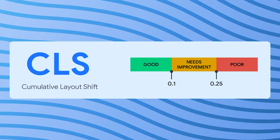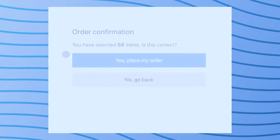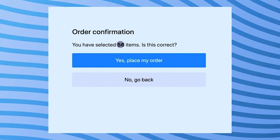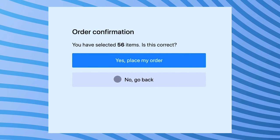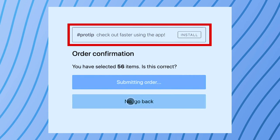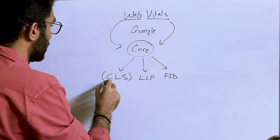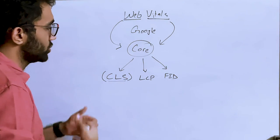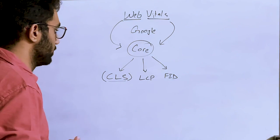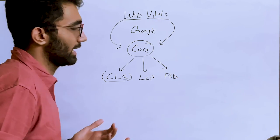Let's look at these metrics one by one, starting with Cumulative Layout Shift. As you can see on the screen, if you wanted to place an order or go back, you might accidentally click 'submit order' because of a notification that appeared suddenly at the top. That is a cumulative layout shift, which is bad in the eyes of Google.